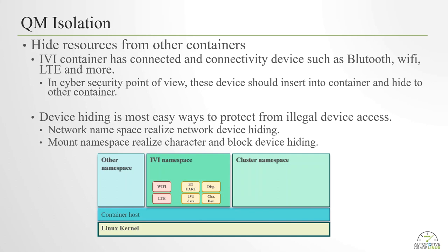How do we hide resources from other containers? The IVI container has connected devices such as Bluetooth, Wi-Fi, LTE, and more. From a cybersecurity point of view, these devices should be inserted into a container and hidden from other containers — this is the easiest way to protect from illegal device access. Network namespace realizes network device hiding. Mount namespace realizes character and block device hiding.